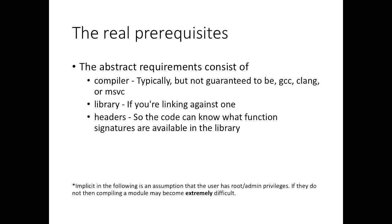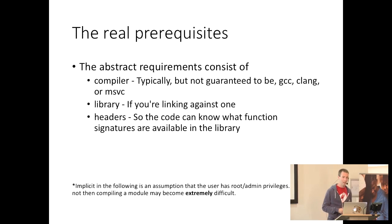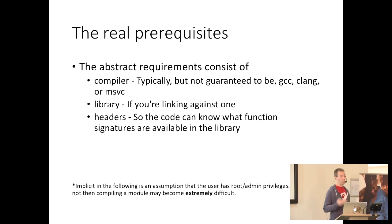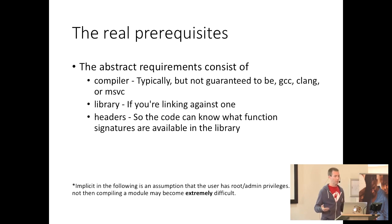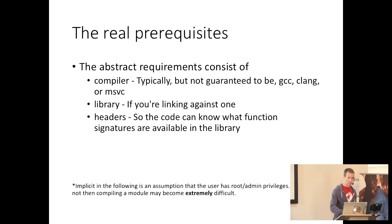So we guessed we'd need a compiler at the beginning, but what is actually required? The real prerequisites are: the compiler — typically GCC or Clang, but also Microsoft Visual Studio on Windows, or sometimes MinGW. If you're compiling against a library, you're going to need that library. And if you're trying to compile and not just dlopen something using the ABI, you will need the headers as well, so you know the function signatures available and the memory layout for things like structs.